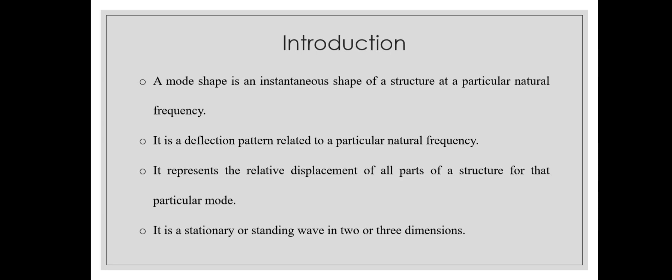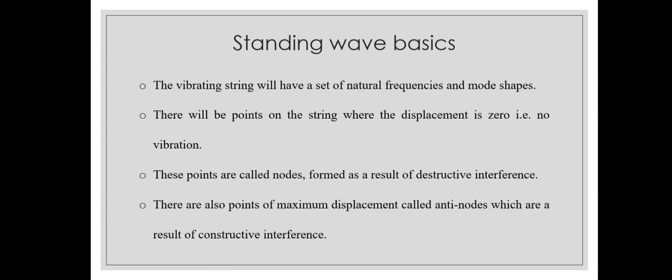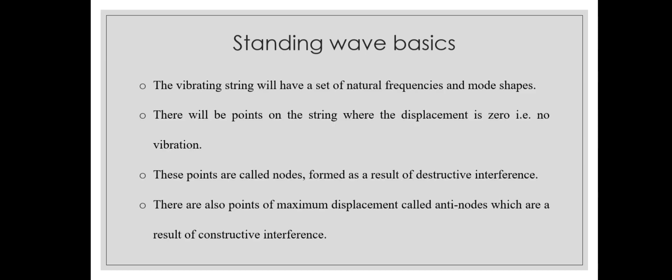A mode shape can also be thought of as a stationary wave or a standing wave in two or three dimensions. If you consider a string fixed on both ends, it can't move at those ends. If I pluck in the middle, I am giving an initial excitation and leaving it — a free vibration condition — so the string is going to vibrate at its natural frequency. When vibrating at its natural frequency, it will have a set of natural frequencies and mode shapes. There will be points on the string where the displacement is zero — no vibration. Since the string is fixed at both ends, those ends are going to be the zero displacement points, called nodes, formed as a result of destructive interference.